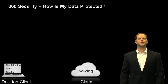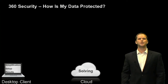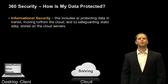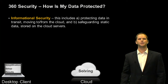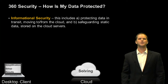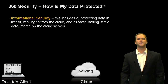One of the most common questions we get is: how is my data protected? Customers want to understand what type of protection measures are in place to safeguard their intellectual property. There are three main pillars — and we'll have an additional episode that covers security in detail. The first pillar is informational security: how we protect your data while it's in transit, moving to and from the cloud, and how we safeguard any static data stored on the cloud servers. With Simulation, none of the data is stored on the cloud servers unless you choose.